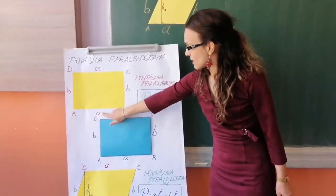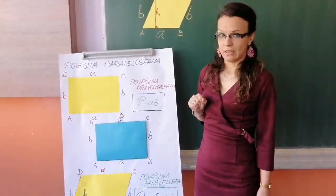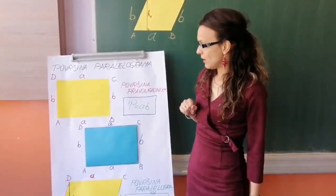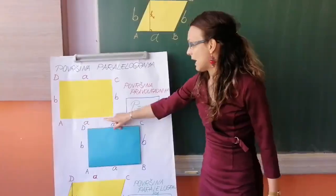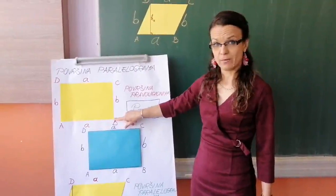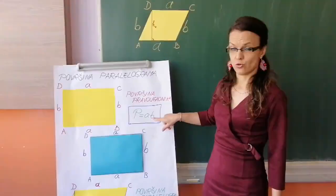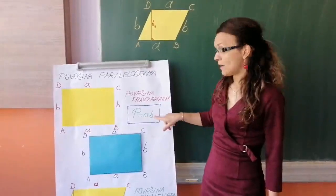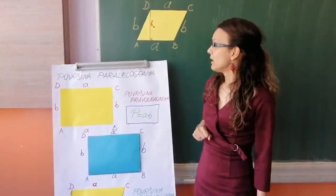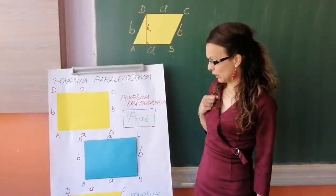Pa sam to označila, znači stranicu A, stranicu B, i stranicu C. I vidjeli smo da se površina pravougaonika računala na način da smo stranicu A pomnožili sa visinom koja pada na tu stranicu. Obzirom da su stranice pravougaonika međusobno okomite, površinu pravougaonika računali smo po formuli A puta B. Moj današnji zadatak jeste pokušati objasniti na koji način izračunavamo površinu paralelograma.